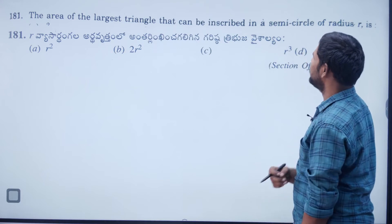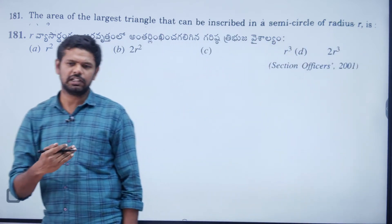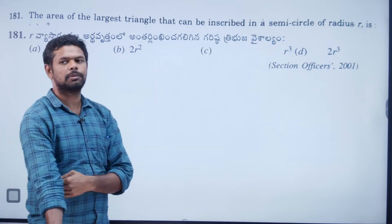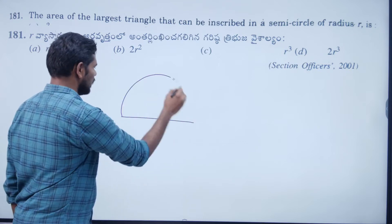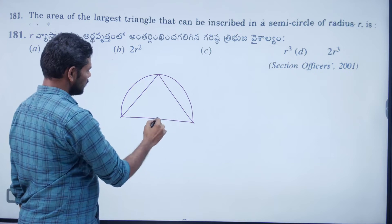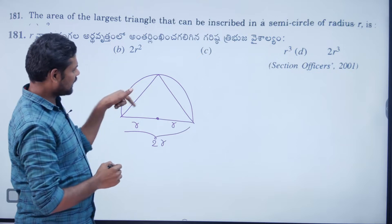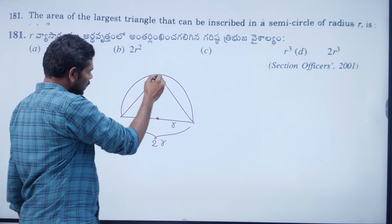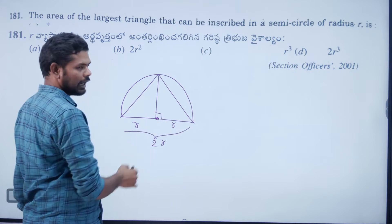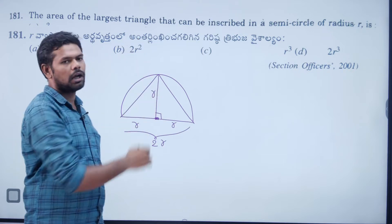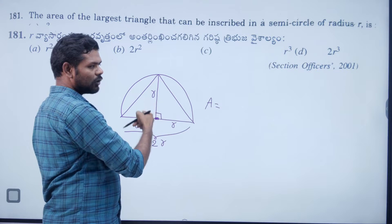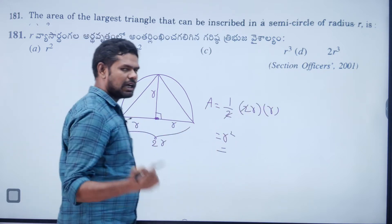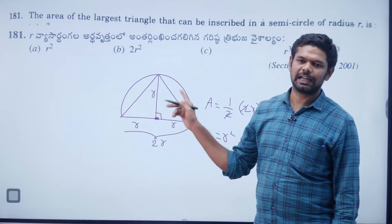Question 181: The area of the largest triangle that can be inscribed in a semicircle of radius R. The semicircle has radius R, and the triangle has base 2R. The height is R. So the area of the triangle is half base into height: half × 2R × R = R². The answer is R².